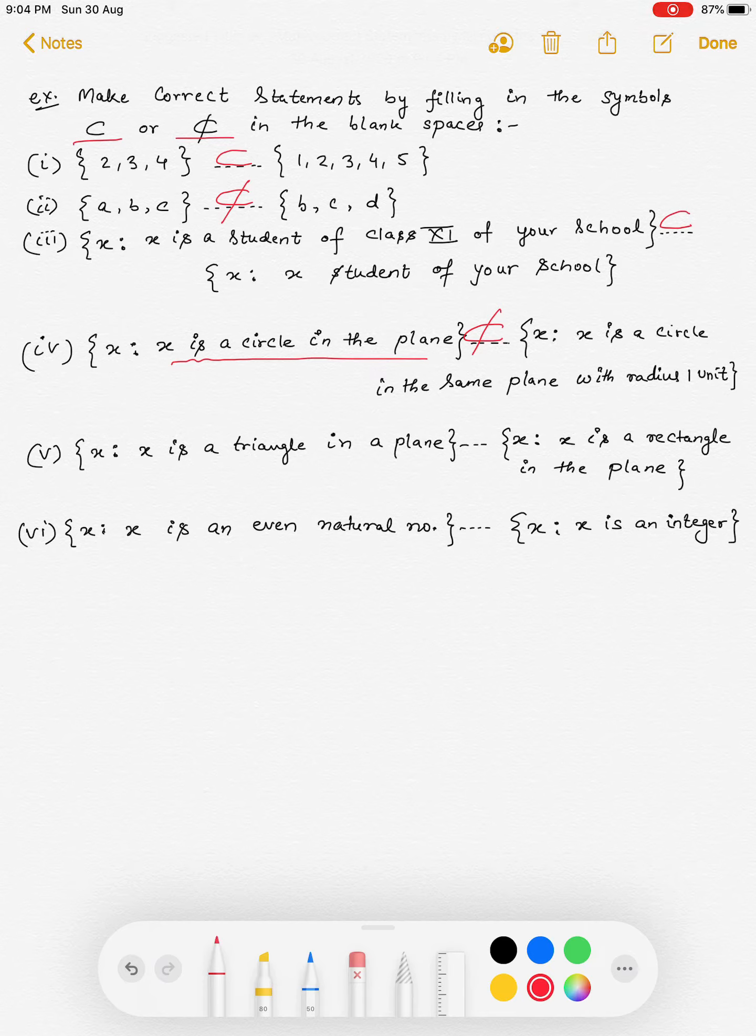X is a triangle in a plane, X is a rectangle in the plane, not subset, इदर triangle है, इदर rectangle है.